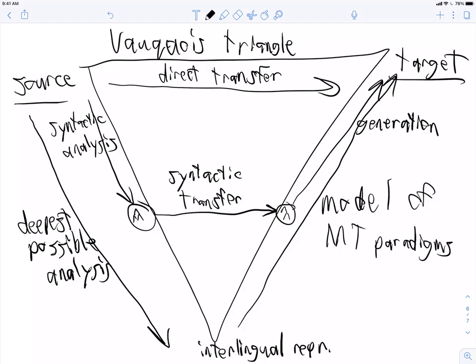This is the Vauquois Triangle, a commonly used model to describe various processes and paradigms of machine translation, primarily used throughout the 20th century.